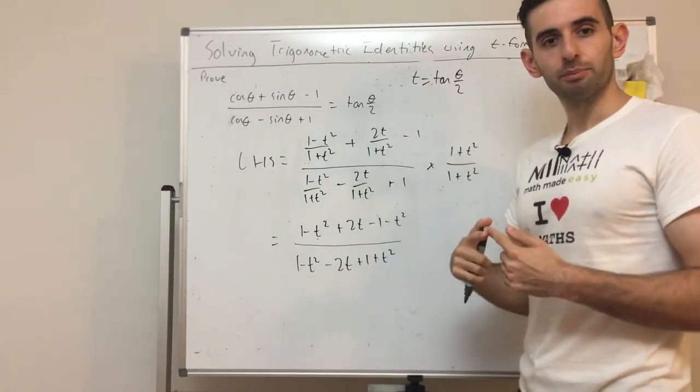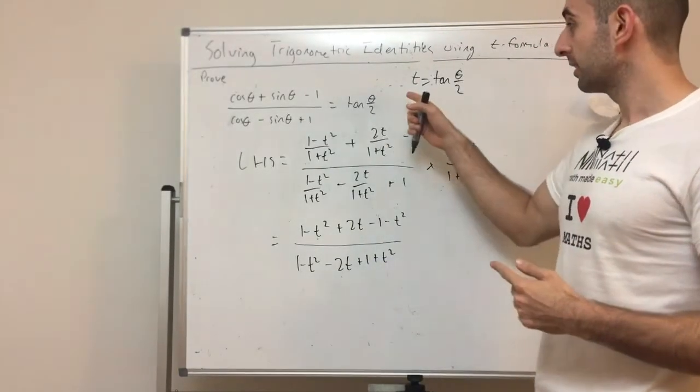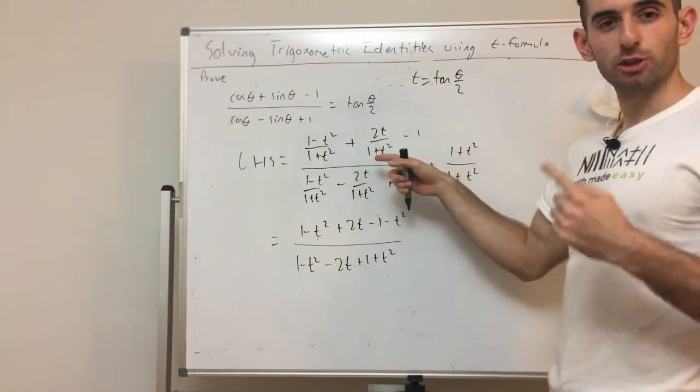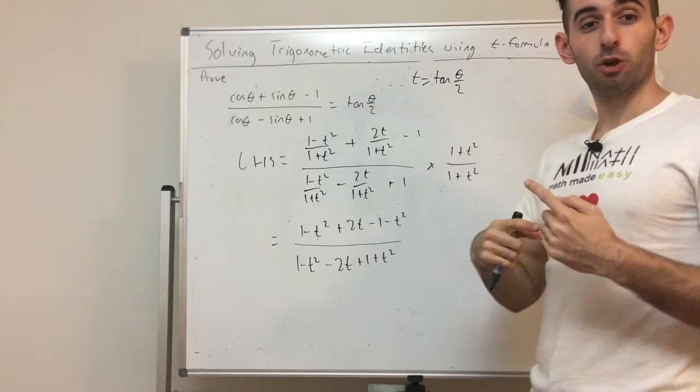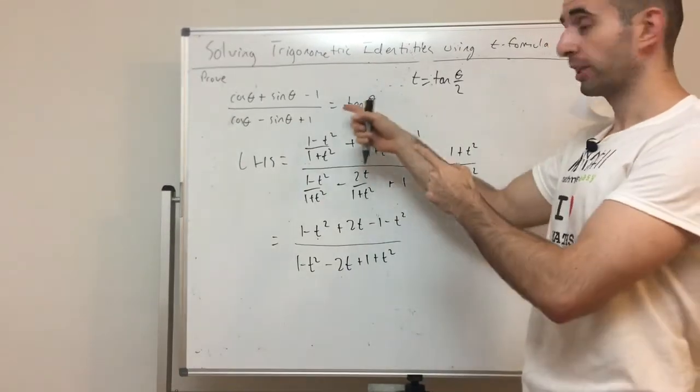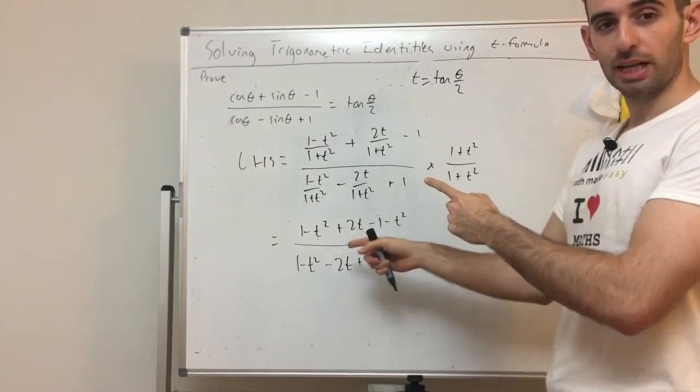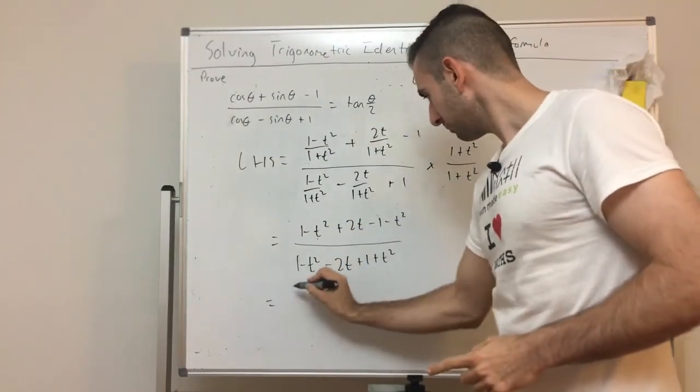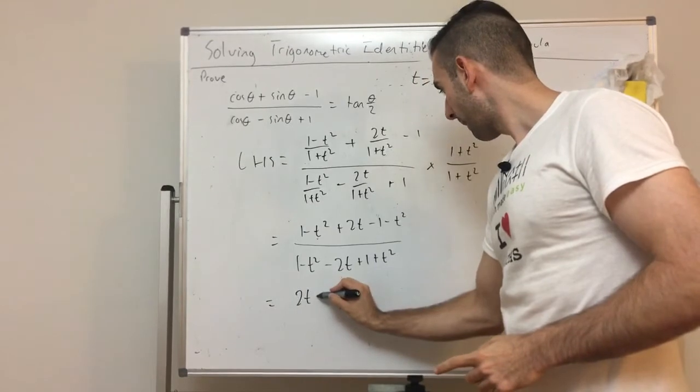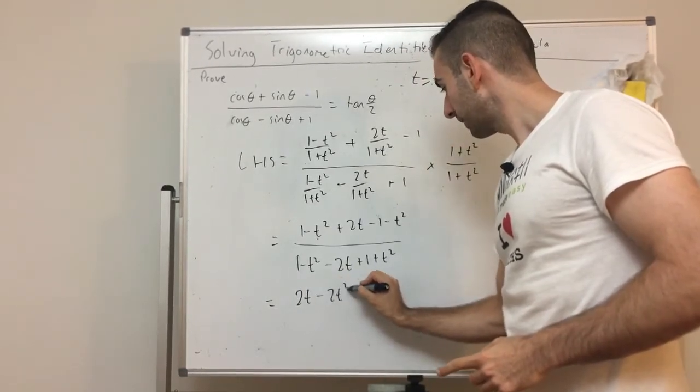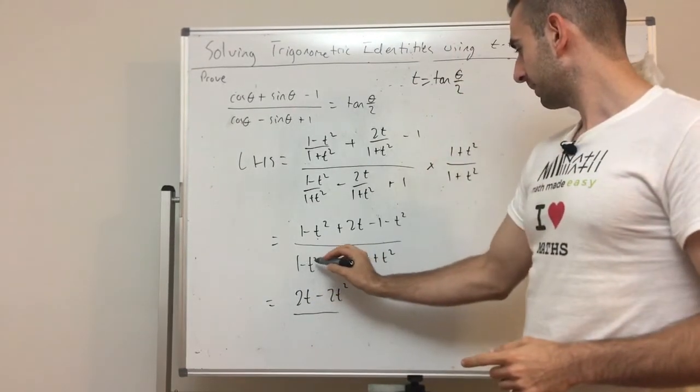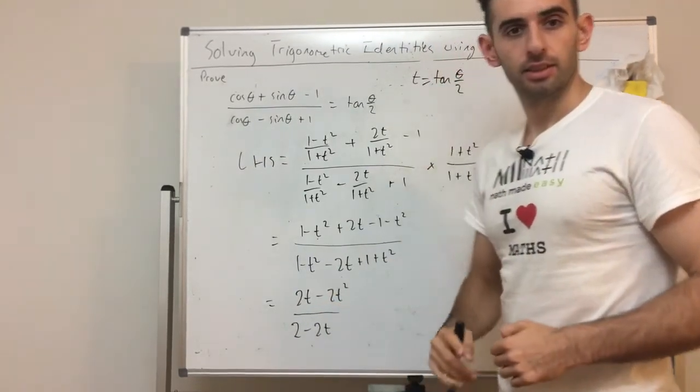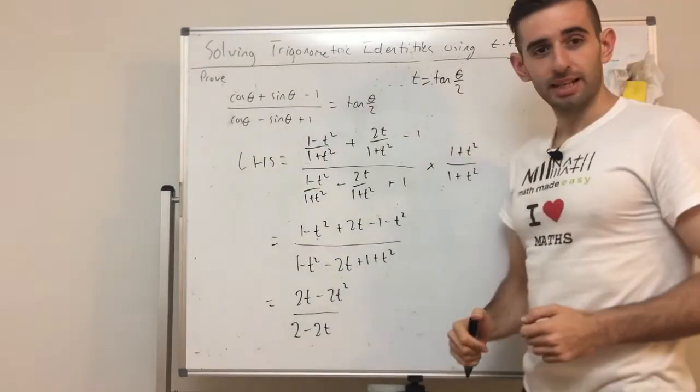So first off, T formula makes dealing with trig a lot easier because there's no trig. It's just algebra. But with this compound trig, this makes T formula 10 times easier than ordinary trig. Because now this is a simple fraction. I'm going to collect like terms. The ones cancel. So it's 2T minus 2T squared on top. On the bottom, the T squareds cancel and it's 2 minus 2T. Look how much better that is.